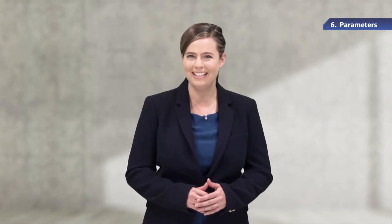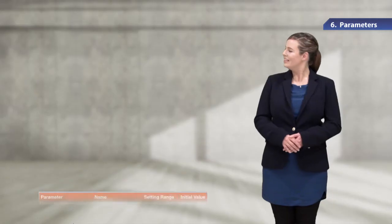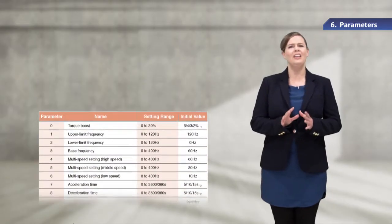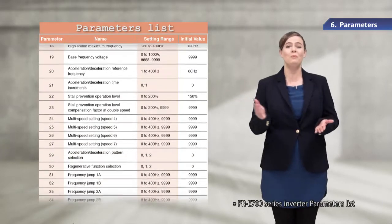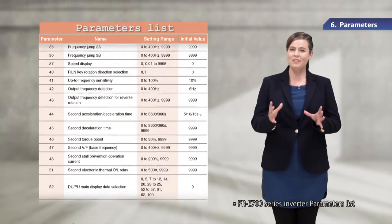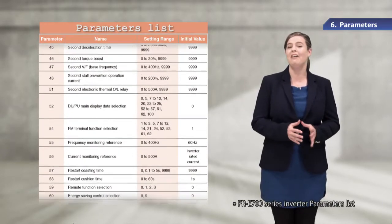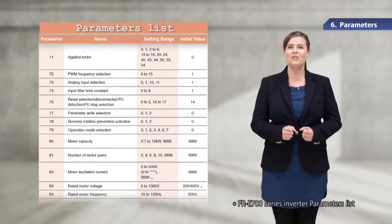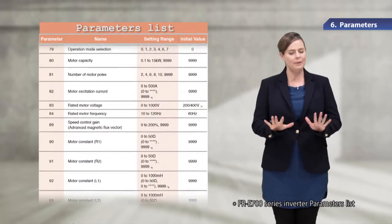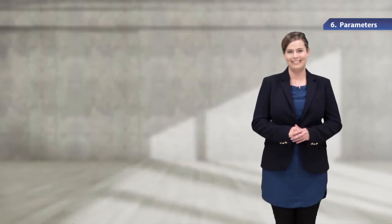It might be better if you keep this useful function in mind. There are a lot of parameters available for Mitsubishi General Purpose Inverters. Most of these parameters have preset initial values, which enable the motor to run with minimum settings. Let's take a look at the basic parameters required to run the motor.